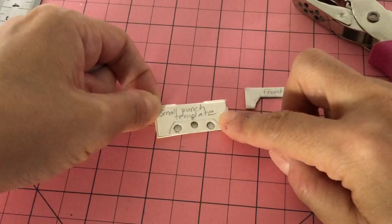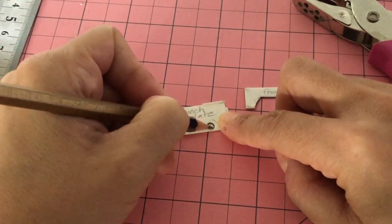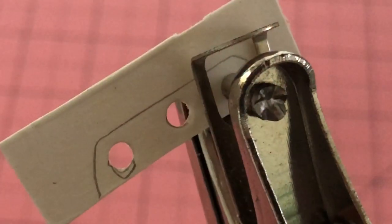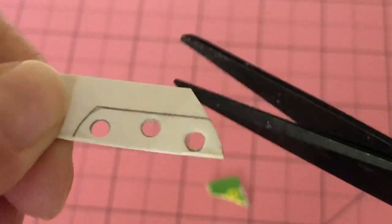Then take the punch template and mark where the holes go. Here I used a brad punch. Cut out two of these shapes.